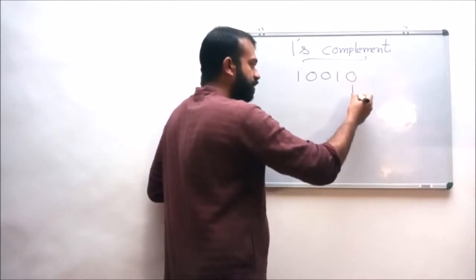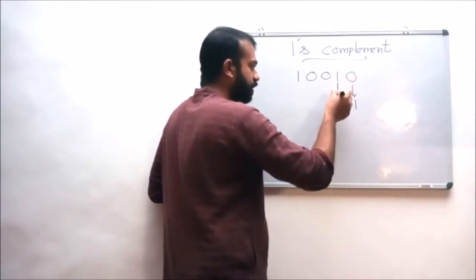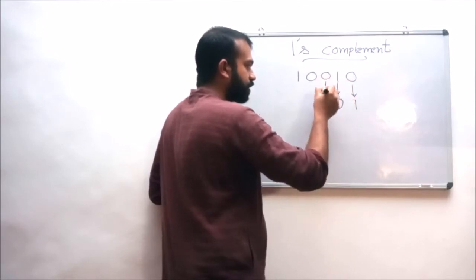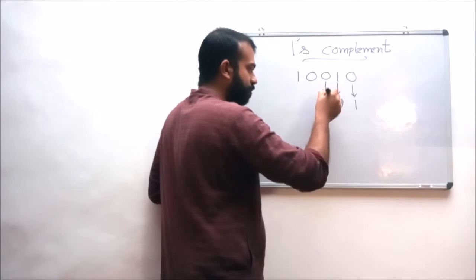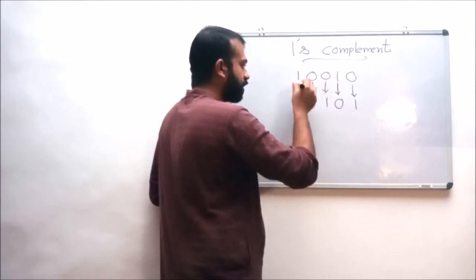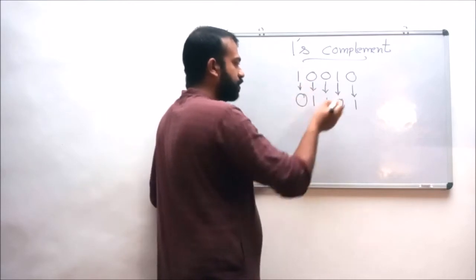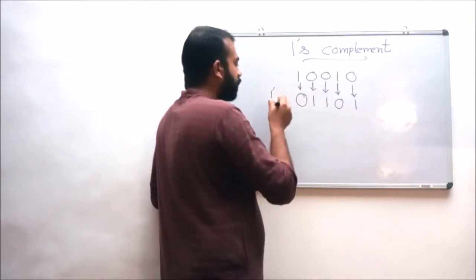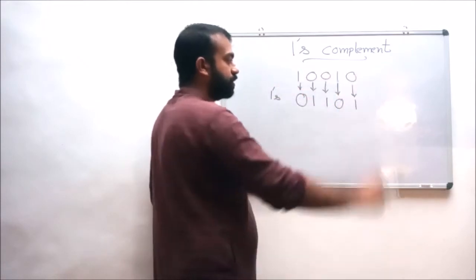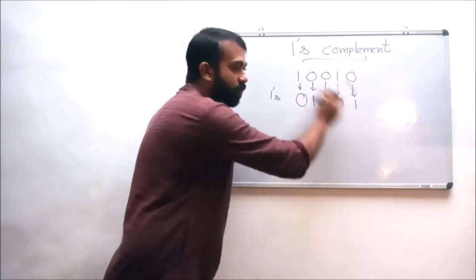So this zero is replaced with one. For this bit, the bit is one, so it is replaced with zero. For this bit, the bit is zero, so this is replaced with one; and for this zero is replaced with one; and finally for one it is replaced with zero. So the one's complement of the number 1 0 0 1 0 is 0 1 1 0 1.